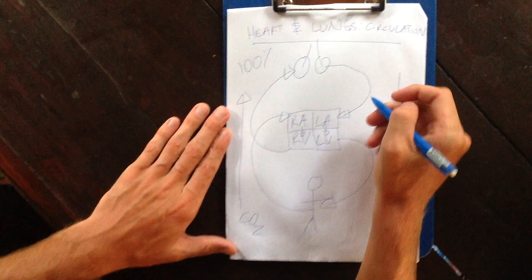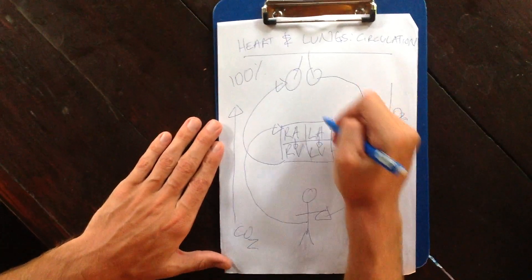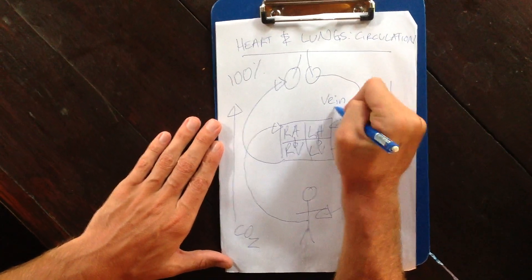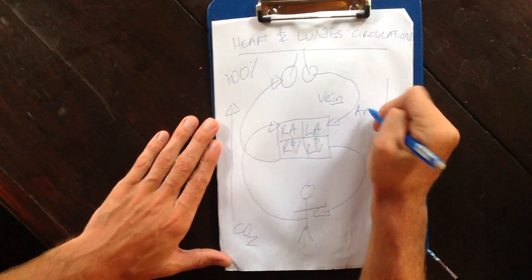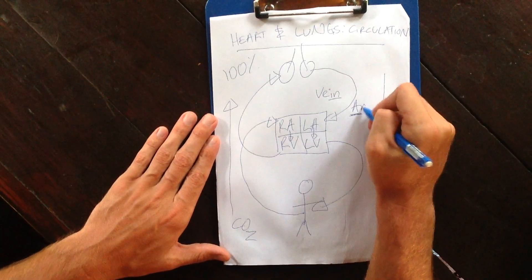From here, my final key point is that veins always go into the heart. It's that they into the heart, and arteries always go away.